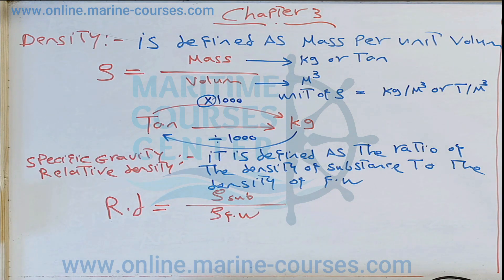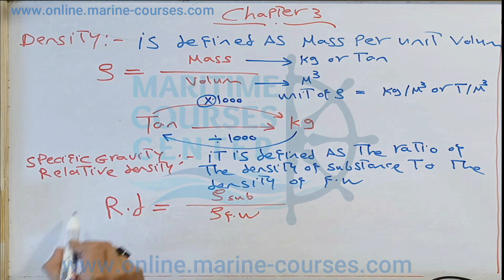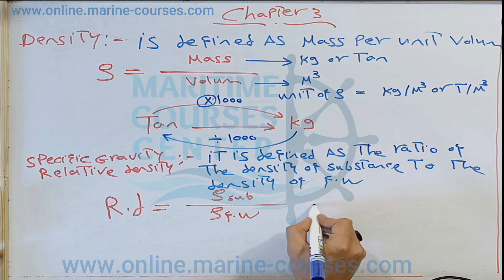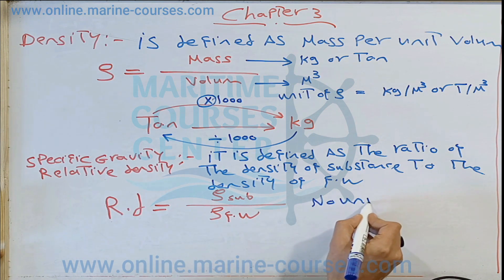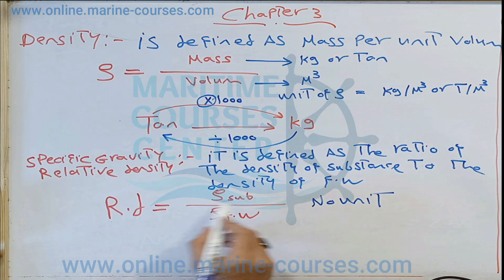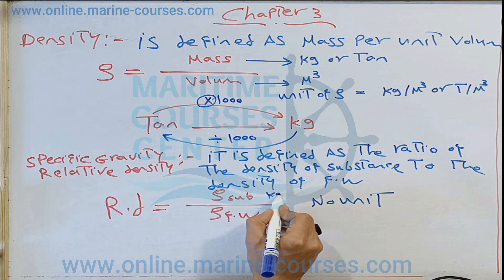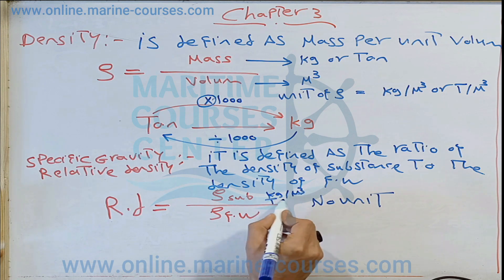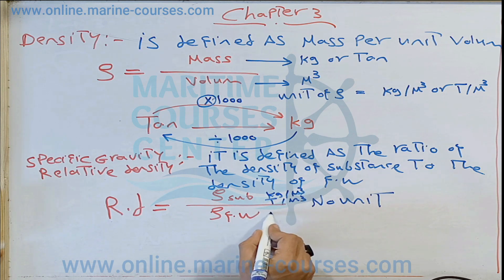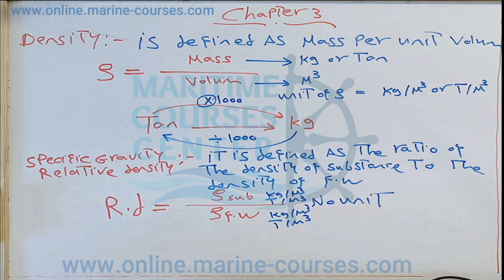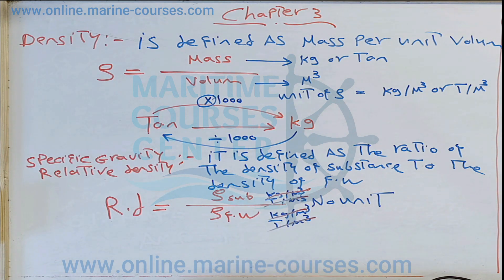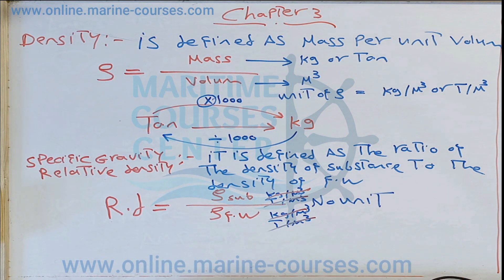In relative density, we don't have a unit — no unit. Why? Because the density unit is kilogram per meter cubed or ton per meter cubed for both the substance and fresh water, so they cancel out. We don't have a unit for relative density because it is relative to the density of fresh water.